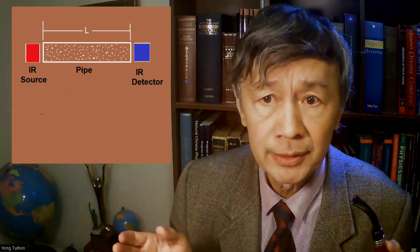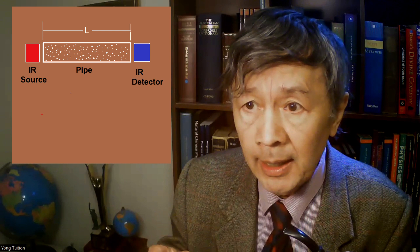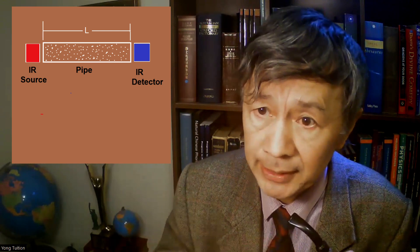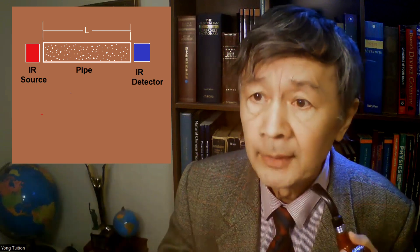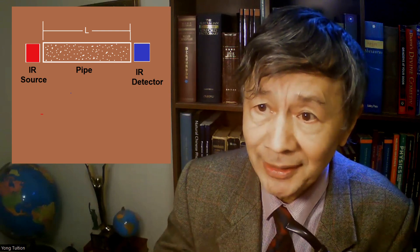First, let's consider a pipe whose length is just a few meters or even shorter, as in the case of measurement in a lab. The infrared source and infrared detector are placed at the two ends. Then the pipe is filled with CO2 gas, as John Tyndall did in 1860. Perhaps many people have known that CO2 can absorb part of the terrestrial IR radiation, predominantly near 15 micrometers. It means that the amount of IR absorption should be proportional to the product of CO2 concentration and the length of the pipe.